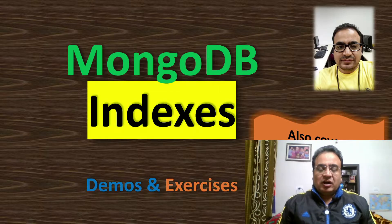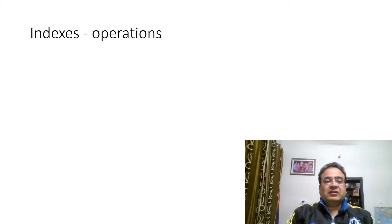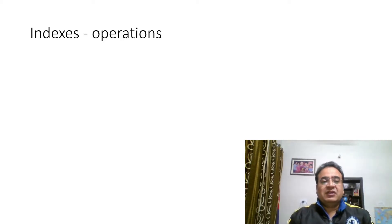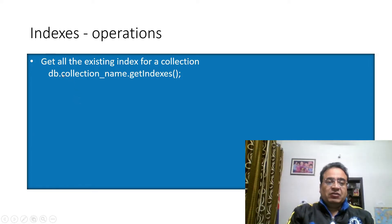We will continue with our discussion on index operations as well as how to strategize the best use of indexes, how to increase performance using indexes. Operations mean creating an index, which we have already seen, but beyond that: removing an index, listing down all the indexes, and dropping a specific index. All indexes are created on a collection and can be fetched using collection name dot getIndexes.